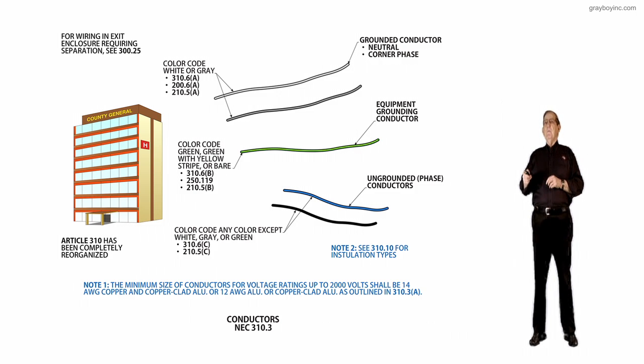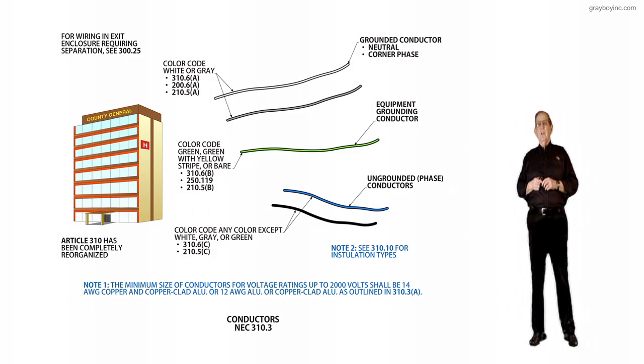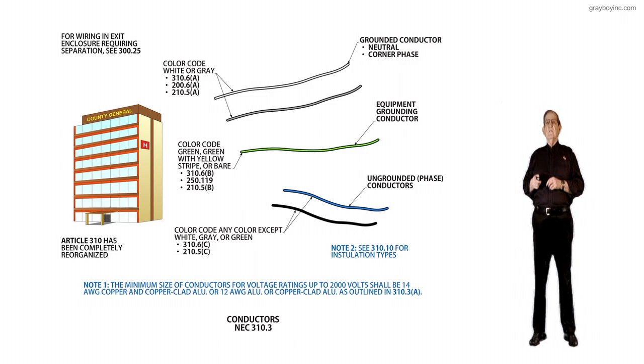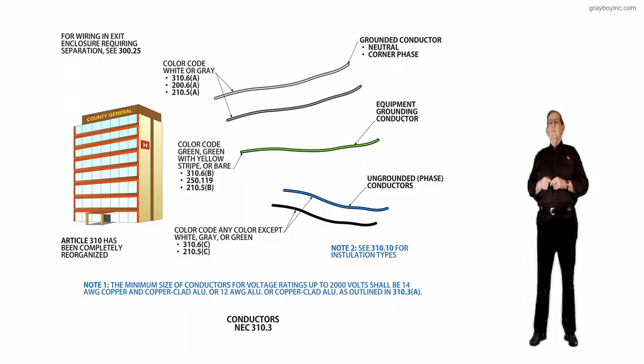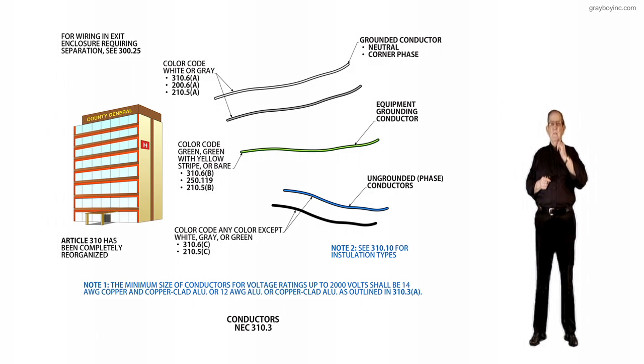Number 3 is your equipment grounds. You see that it's the middle callout, equipment grounding conductor. Notice the color code green or green with yellow stripes or bare is there based upon the size of the conductor. And again, 310.6B is going to refer you to 210.119 to get the color coding for that. And then again, 210.5B if you're a branch circuit.